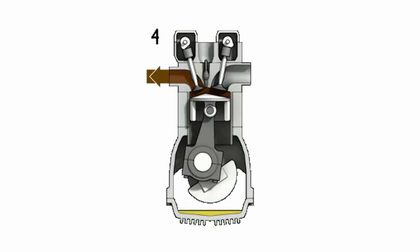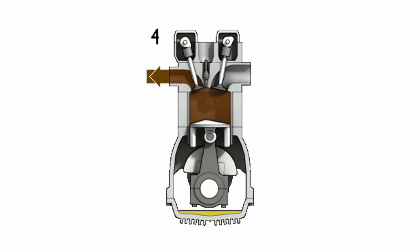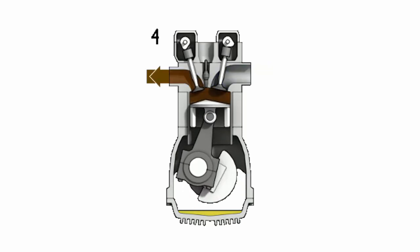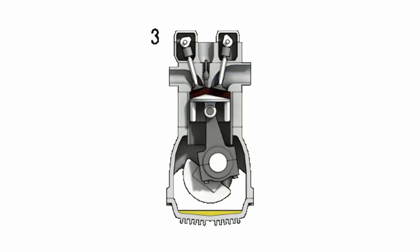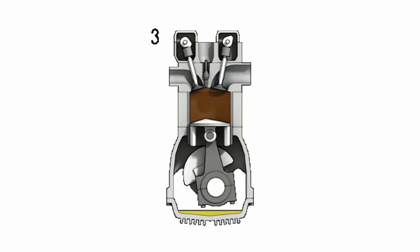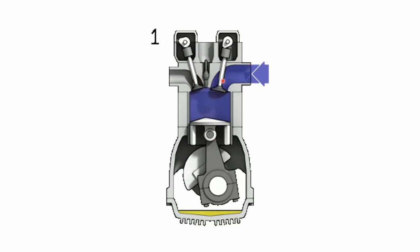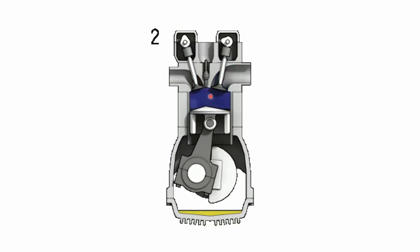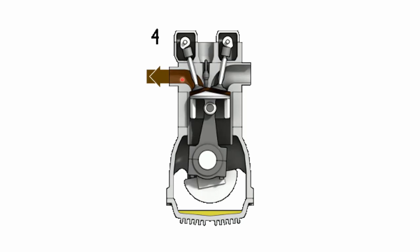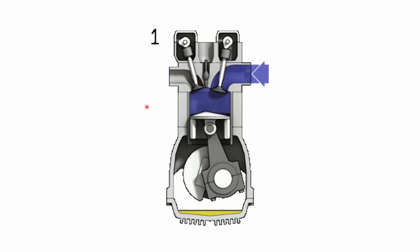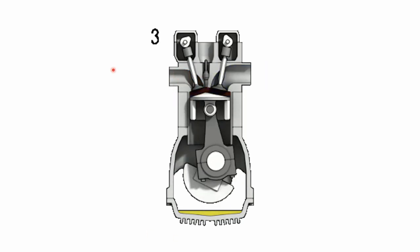In an internal combustion engine, energy is released on the combustion of a fuel mixture, creating high pressure inside the piston-cylinder setup, which drives the piston downwards, providing work necessary to turn the crankshaft. Air is moved in, it's compressed, the mixture ignites, creating high pressure that pushes the piston down, and the air is exhausted.